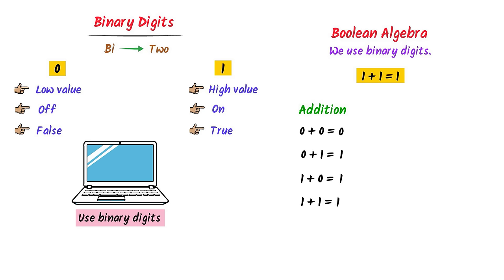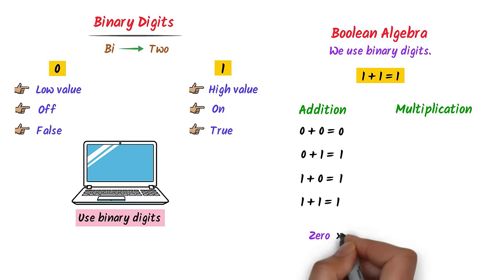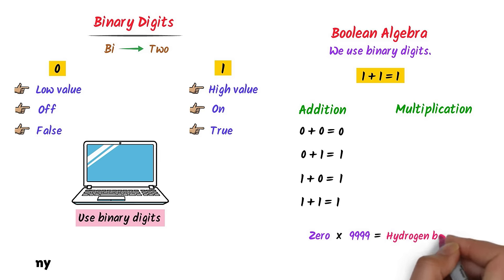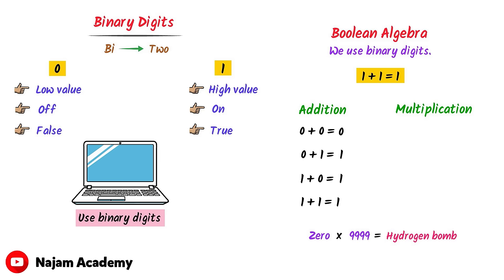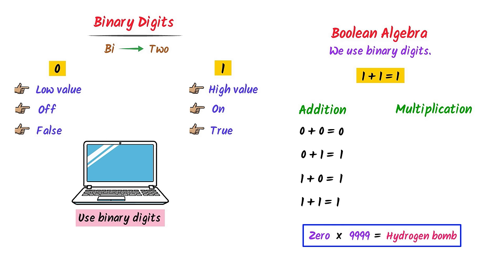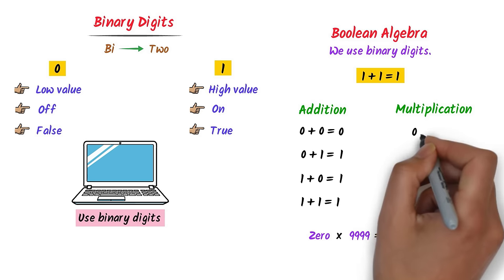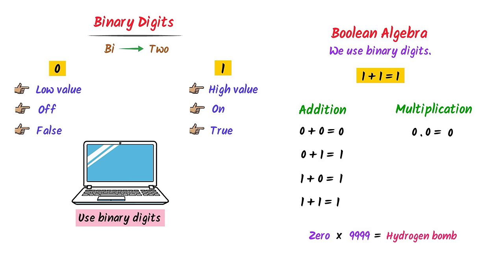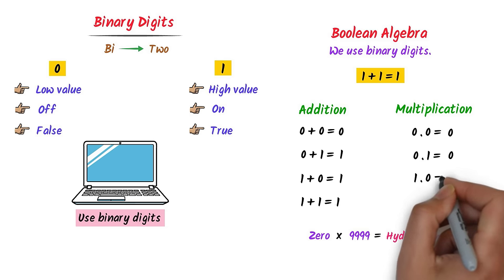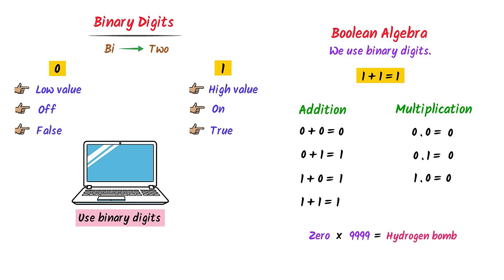Consider multiplication of binary digits in Boolean algebra. Remember that 0 in multiplication is like a hydrogen bomb — it finishes everything. So: 0 times 0 is 0, 0 times 1 is 0, 1 times 0 is 0, and 1 times 1 is equal to 1.